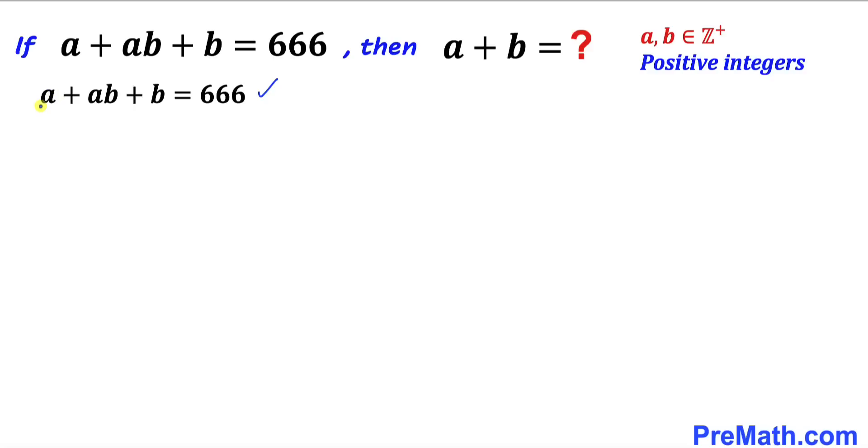Let's focus on the first two terms. Here we can see a is in common. Therefore, I can factor out a and we get a times (1 plus b) plus b equals 666.